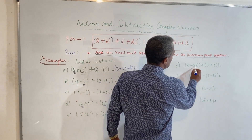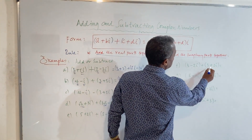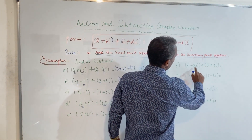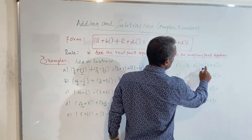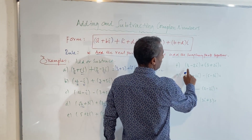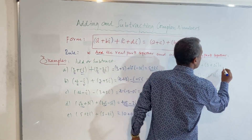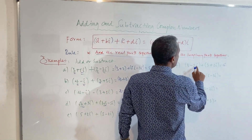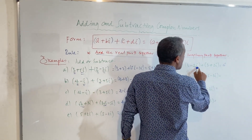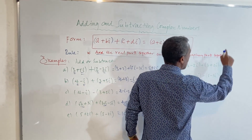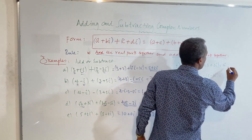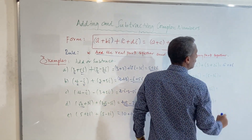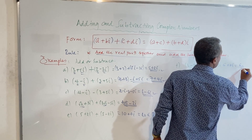For example, 3 minus 2i and its conjugate 3 plus 2i. Three plus three is six, and minus 2i plus 2i becomes zero. So the sum is simply six.